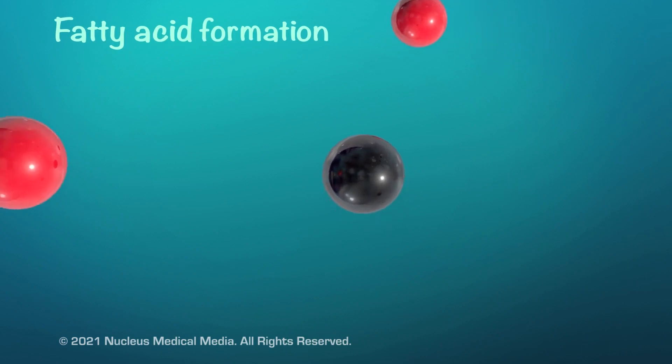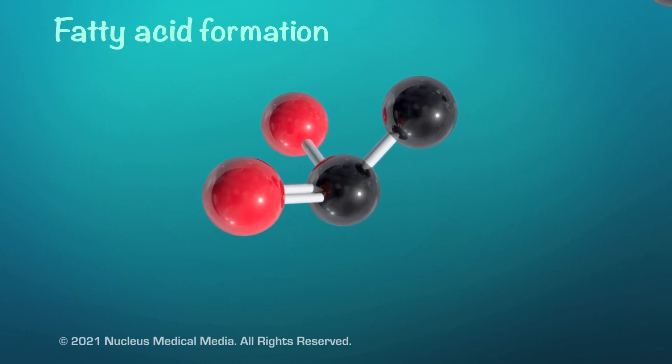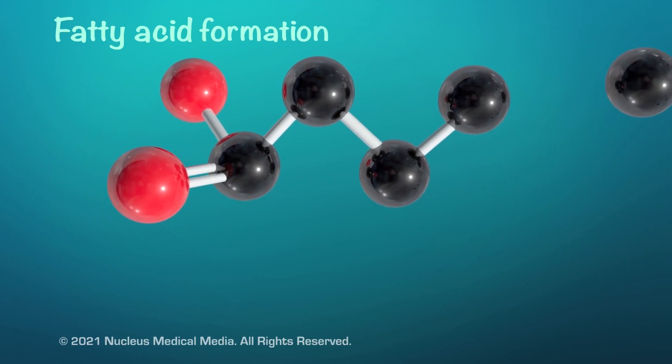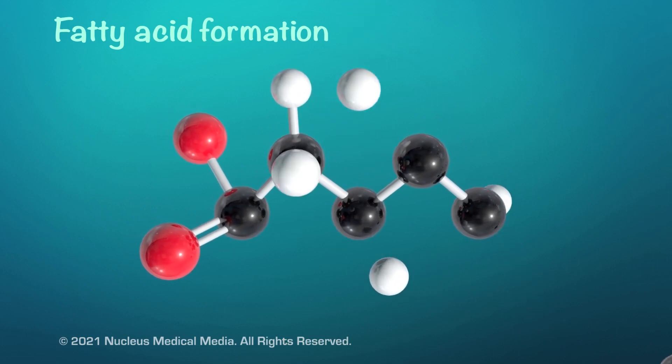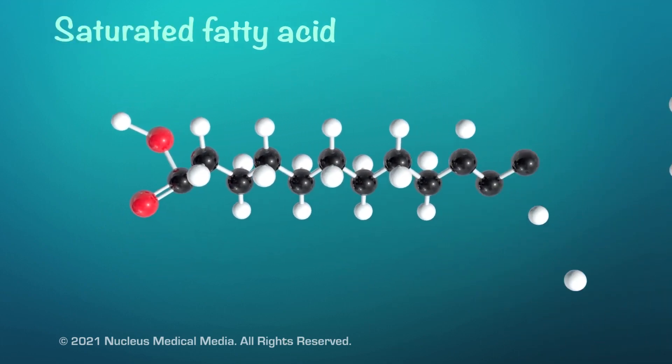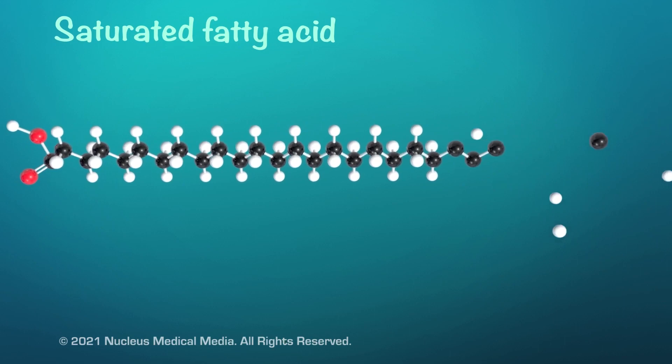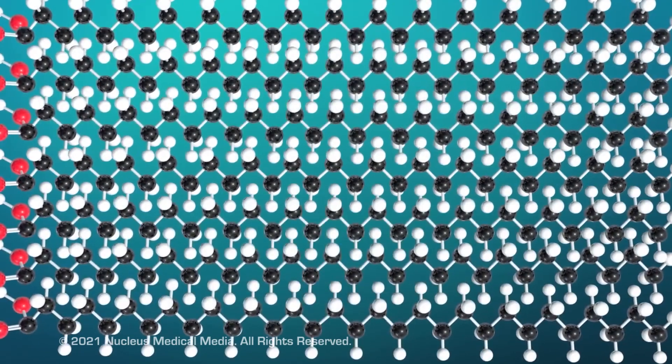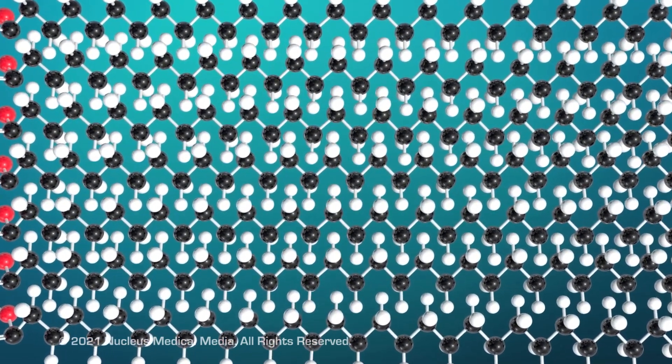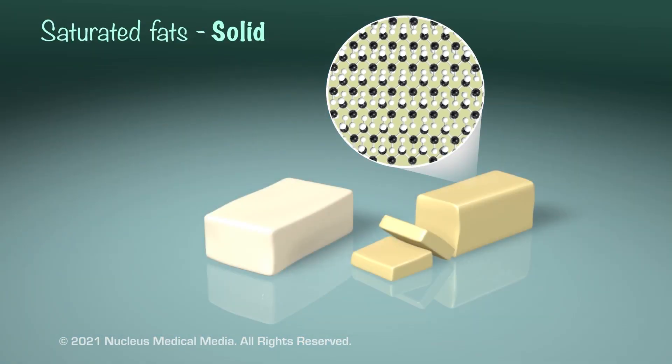You may recall that carbon can form up to four covalent bonds with other atoms. When each carbon atom forms two single bonds with adjacent carbon atoms, and another two single bonds with adjacent hydrogen atoms, we call this fatty acid saturated. This means the fatty acid is saturated with all the hydrogen atoms it can possibly contain. Because of this structure, saturated fatty acids are straight molecules that can pack tightly together. As a result, saturated fats are usually solid at room temperature. Examples of saturated fats include lard and butter.